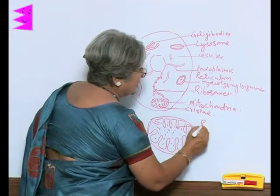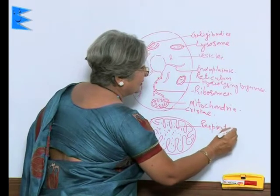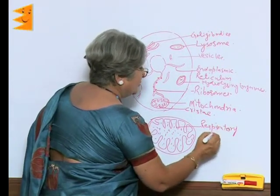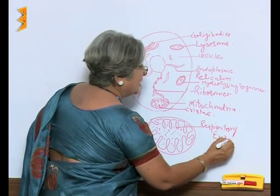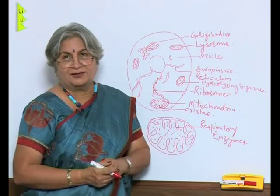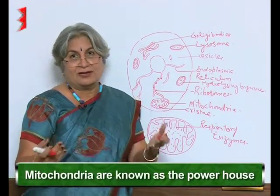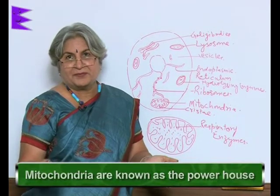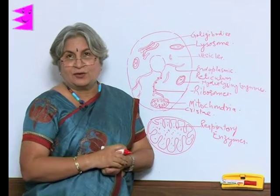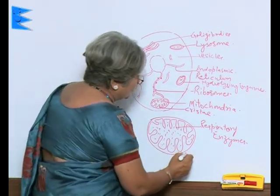What does that mean? What is it concerned with? Respiration is concerned with the release of energy. So mitochondria are the powerhouse. Your kingdom also needs electricity — it also needs a source of energy, like your cooking gas supply. So these are the powerhouse of the cell.